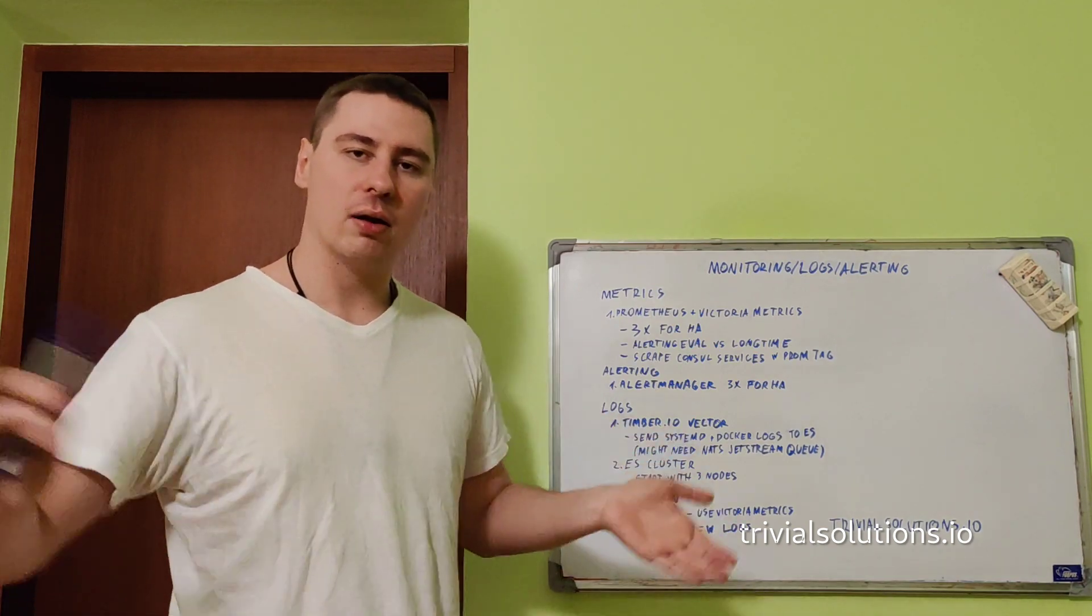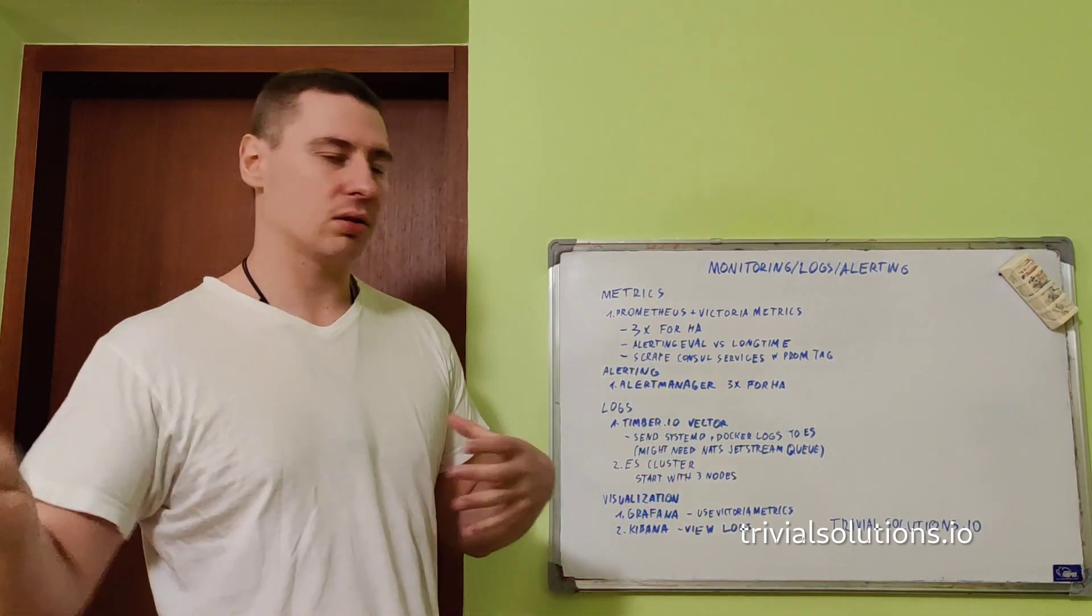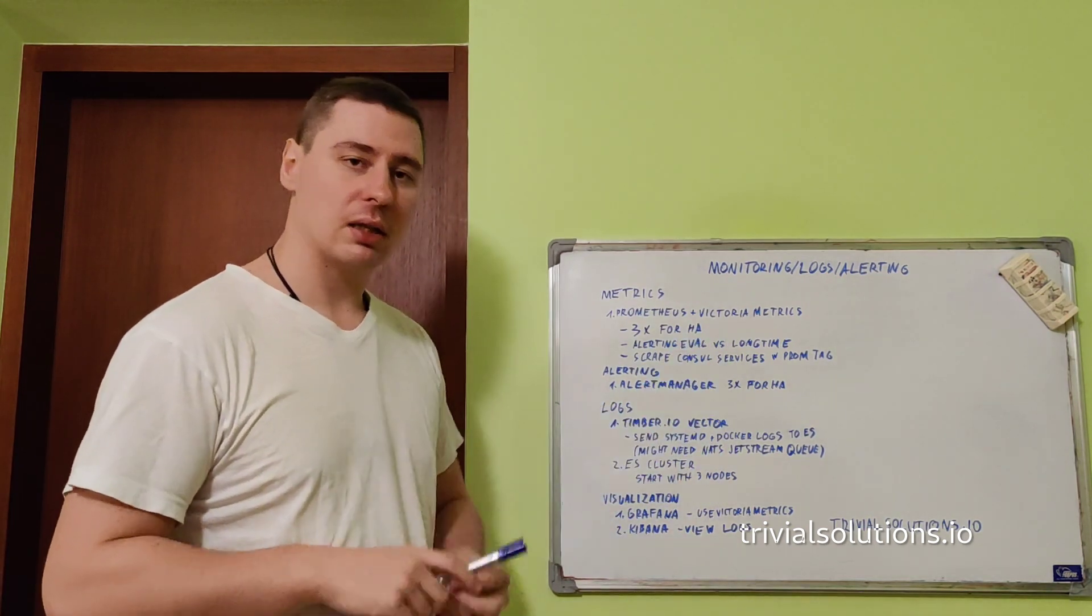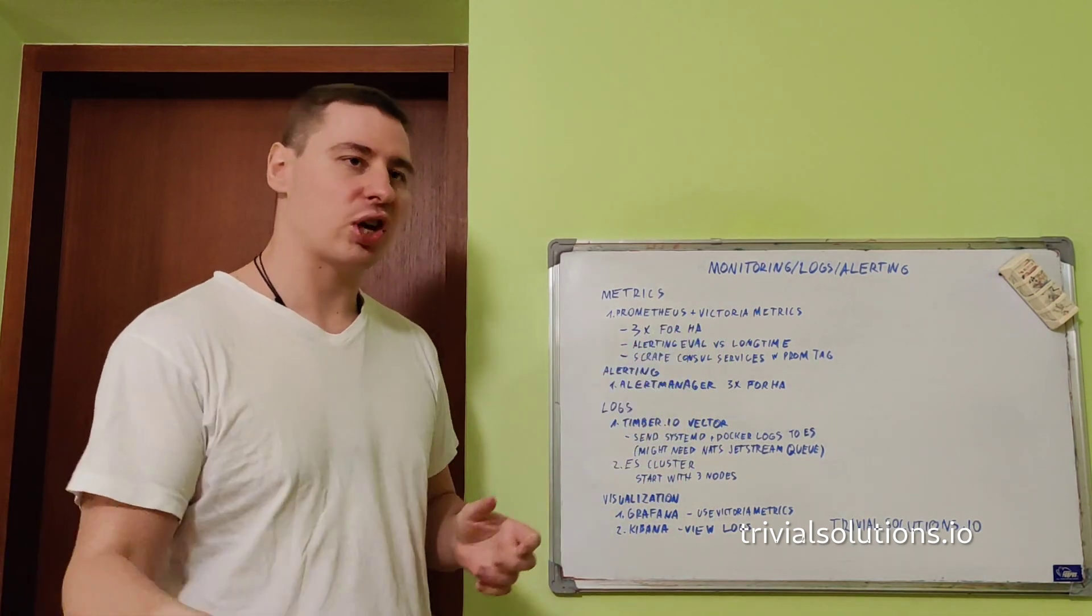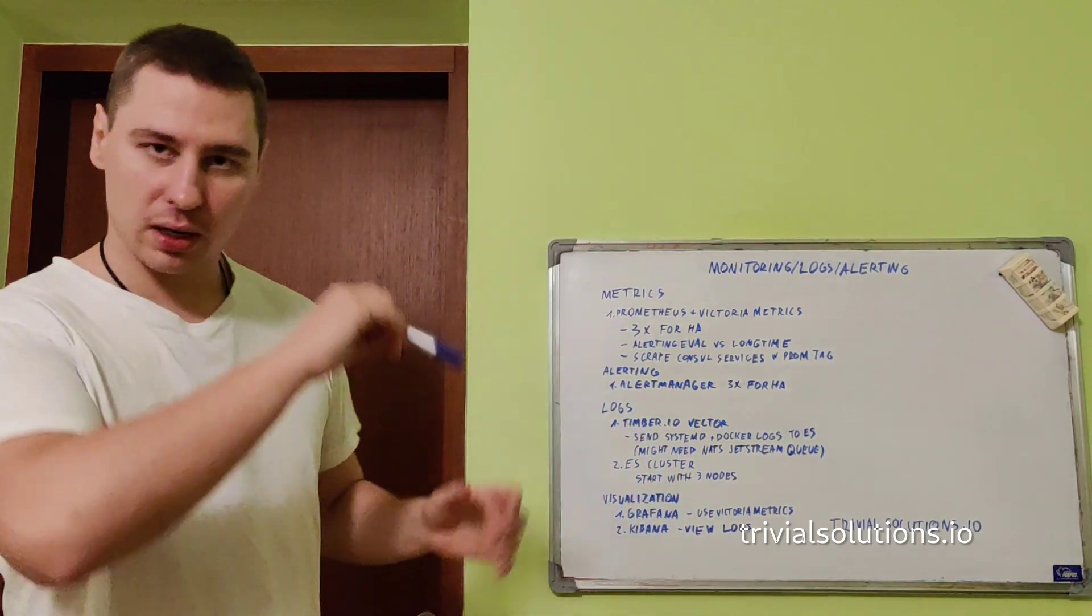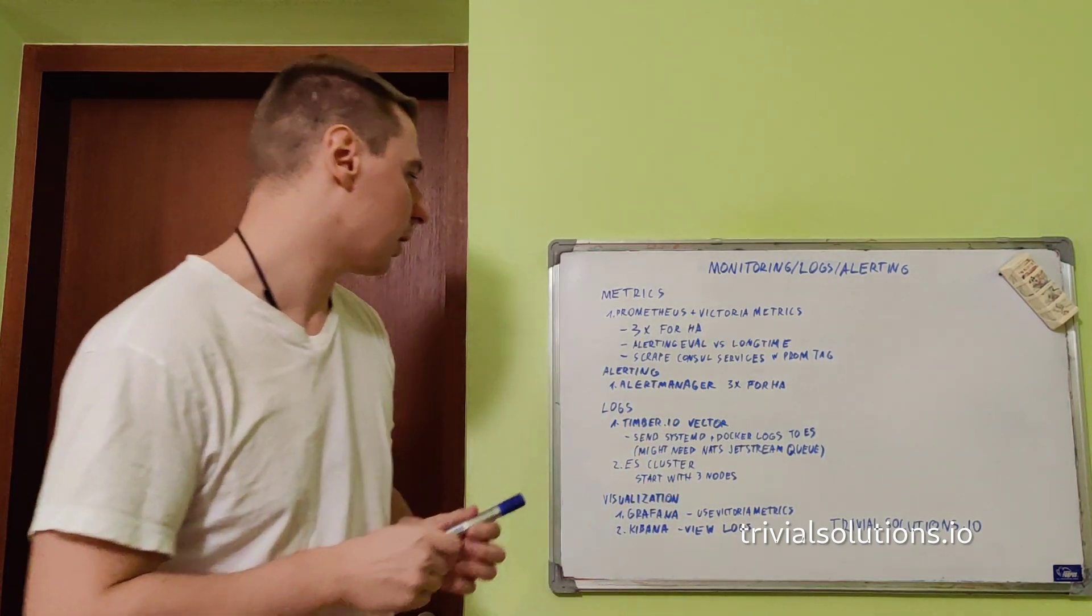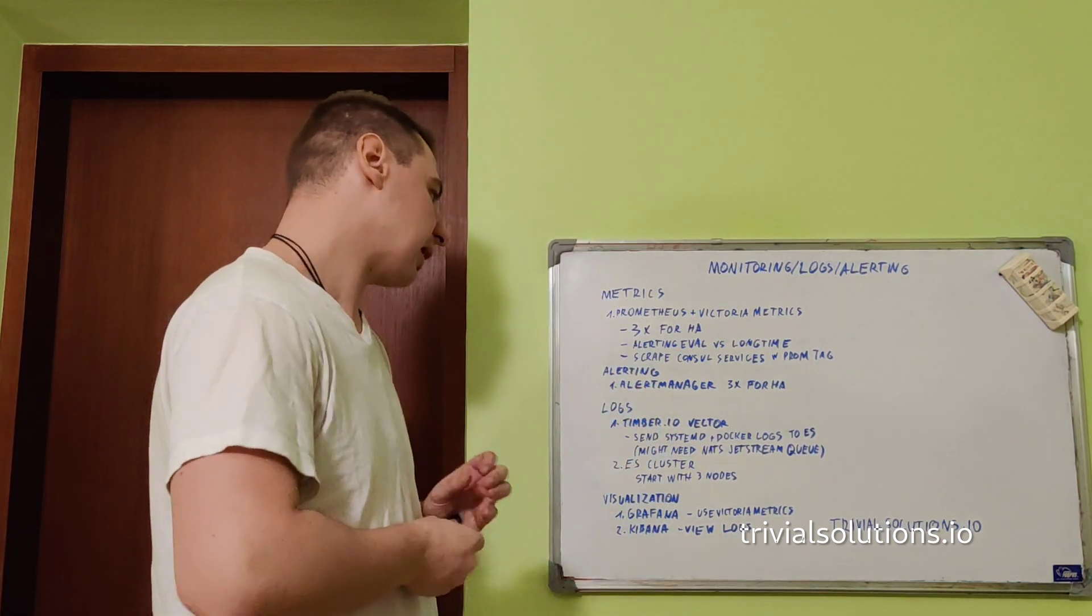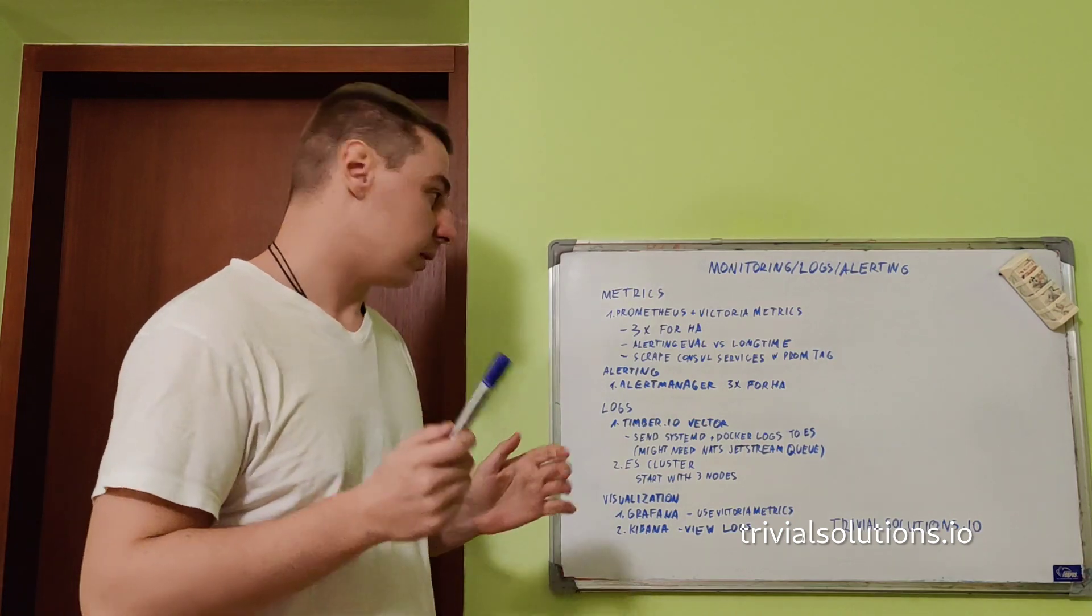I use Prometheus for evaluating alert rules only. I don't use Prometheus to show metrics in Grafana. For long-term storage, that's where Victoria Metrics shines. That's what is queried from Grafana when you need to visualize everything.